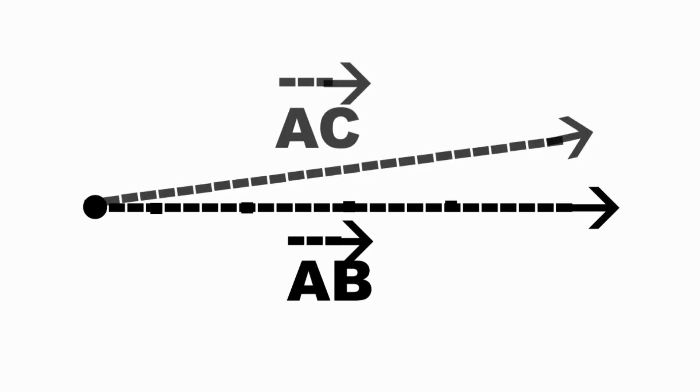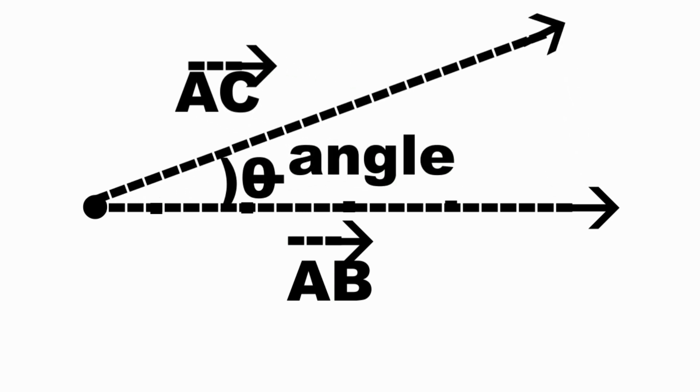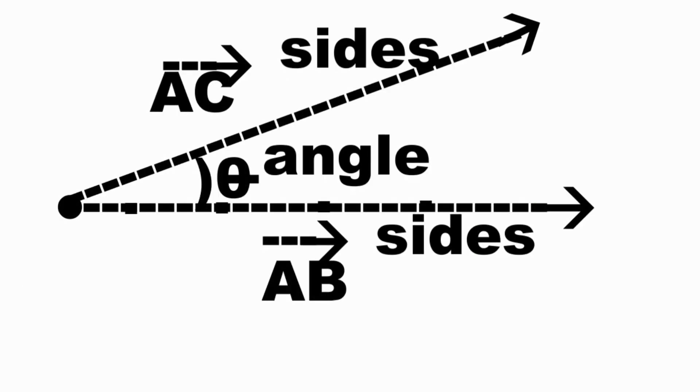We can have two intersecting rays that form an angle. An angle is the figure formed by two rays, called the sides of the angle, sharing a common endpoint, called the vertex of the angle.